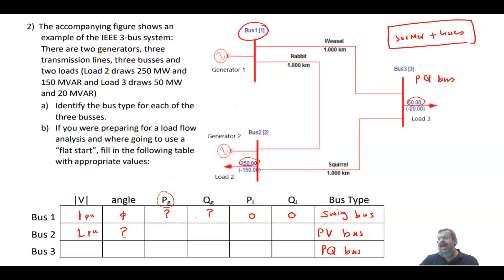How much PG? It's not really identified here, usually it's given, but we can assume a value. Since the load is 300 megawatt plus losses, I can assign anything less than 300 megawatt, let's say 200 or 150 megawatt. QG we don't know, so this is also unknown and needs to be calculated. The PL and QL are given as 250 and 150.